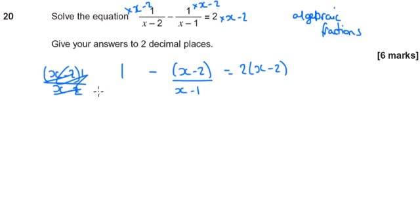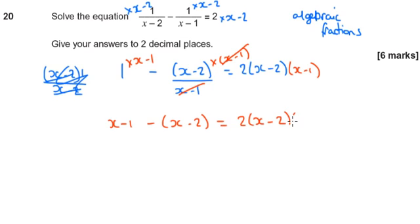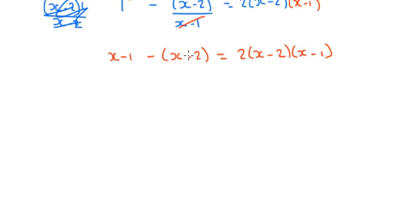So we've got rid of one of the fractions. We need to do the same thing to now get rid of the other fractions. I'm going to times this by x minus 1, this by x minus 1, and this by x minus 1. So this becomes x minus 1, or 1 times x minus 1. This, they cancel, so we've just got the x minus 2, and this is 2 bracket x minus 2, x minus 1.